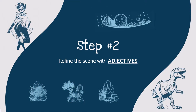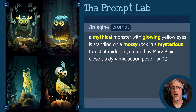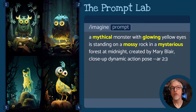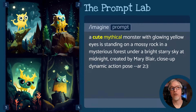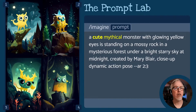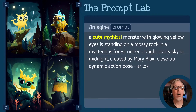This second step is probably the easiest — we're going to start adding adjectives to further polish and enhance our core prompt. Instead of just saying 'a monster with yellow eyes,' we say 'a mythical monster with glowing yellow eyes is standing on a mossy rock in a mysterious forest at midnight.' As you can see in the corresponding images, this gives our prompt a little more energy — characters pop from the background more, and there's more dynamism. We can also do pairs of adjectives: instead of 'mythical monster,' we can say 'cute mythical monster.' Think about interesting adjectives you can add to any noun or verb in your prompt — this is where you can experiment and have a lot of fun.